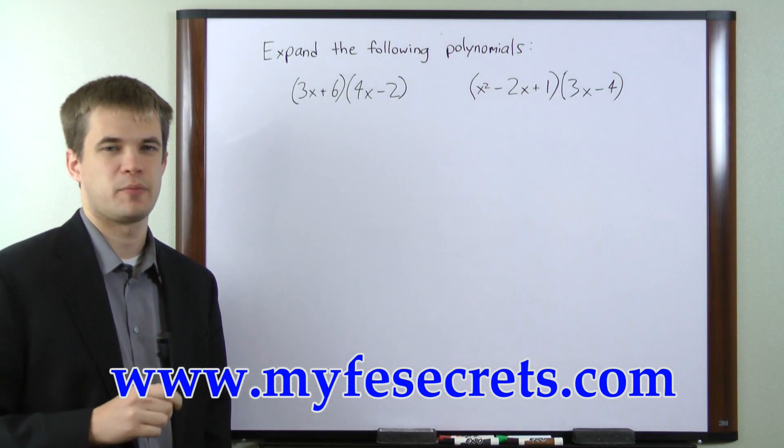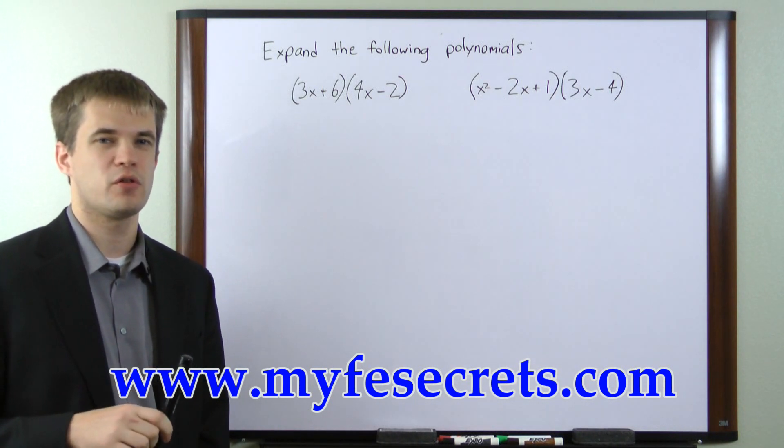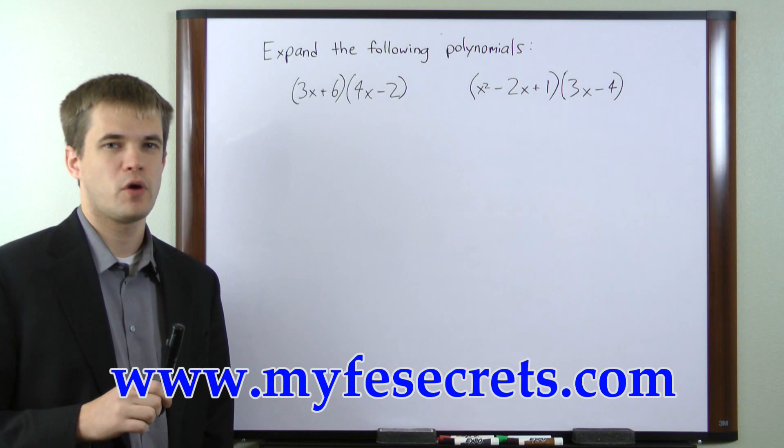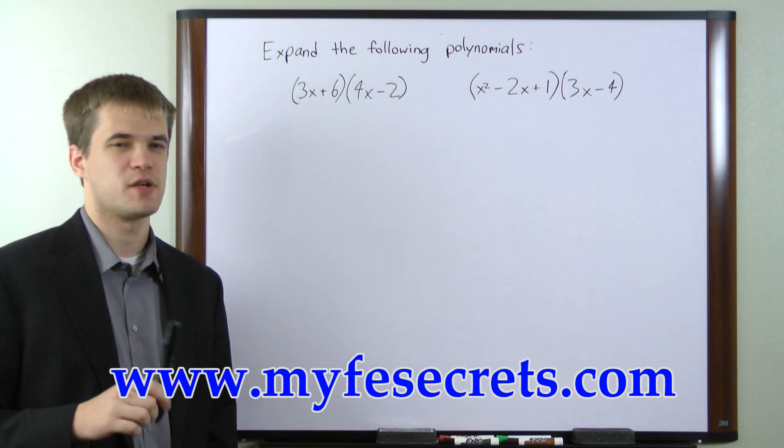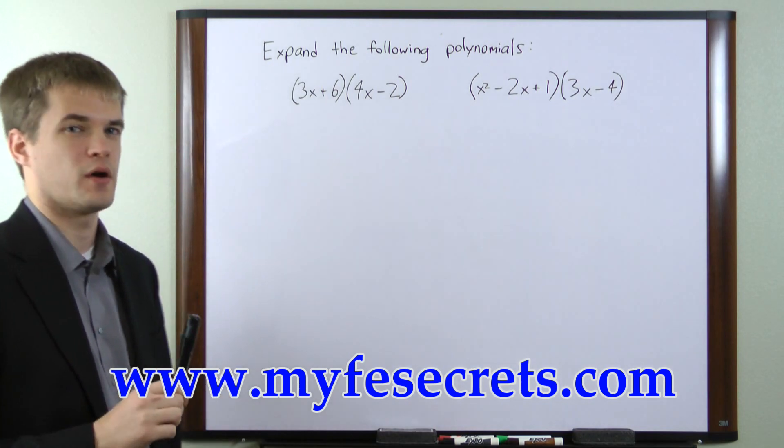The most common method for multiplying a pair of two termed expressions is called the FOIL method. FOIL stands for first, outside, inside, and last. It describes the order in which you multiply each pair of terms.